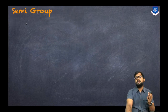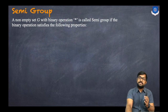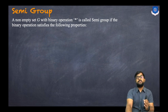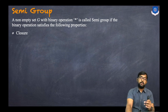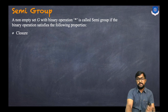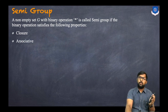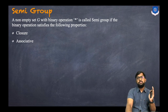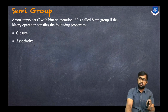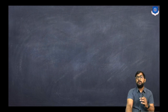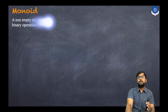The second algebraic structure is the semi-group. A non-empty set G with a binary operation star is called a semi-group if the binary operation satisfies two properties: the closure property and the associative property.